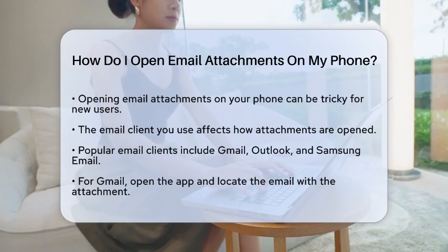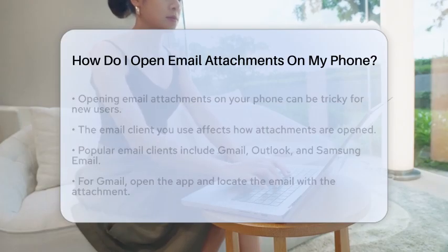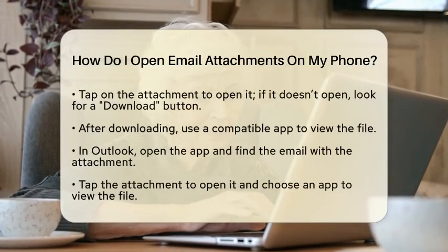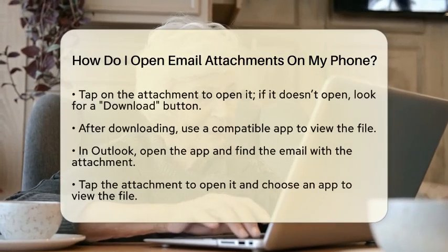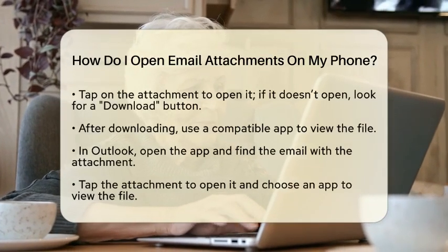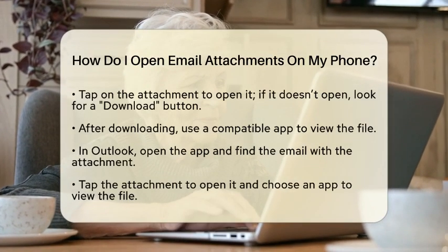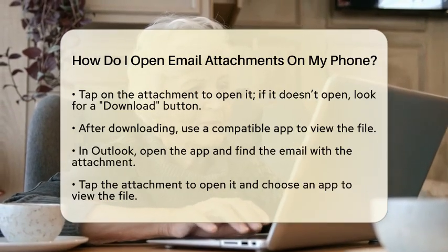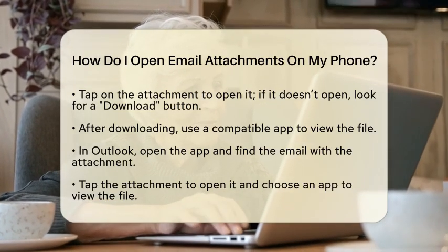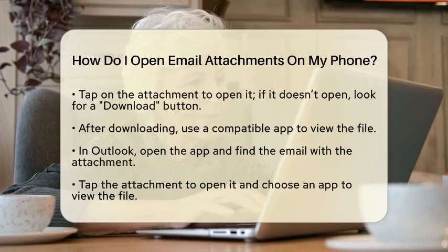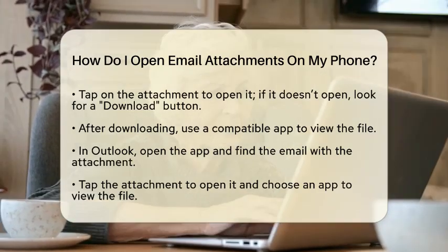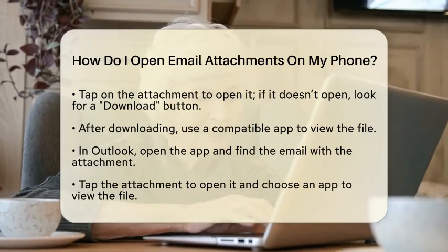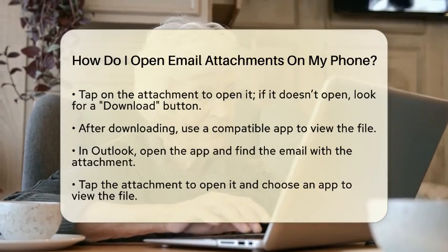Let's start with Gmail. Open the Gmail app on your phone and find the email that contains the attachment you want to access. Once you locate it, tap on the attachment. If it does not open right away, you may need to download it first — look for a button that says Download. After downloading, you can open it with an app that is compatible with the file type.